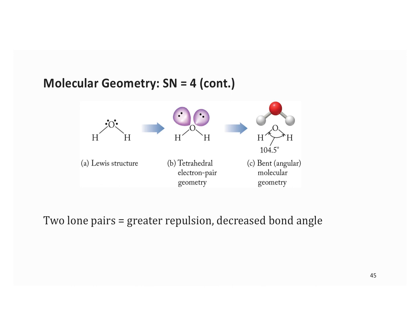Under steric number four, we also have water. Water has four groups, so it's tetrahedral electron pair geometry. When you focus only on the atoms and remove those lone pairs, you see there are two bonds — and so this is called bent. With two lone pairs, there's even greater repulsion, giving an even smaller bond angle of 104.5 degrees.